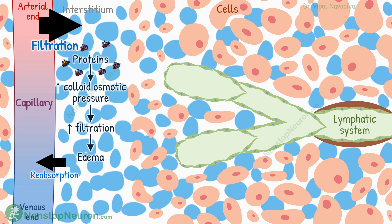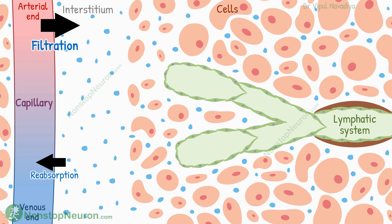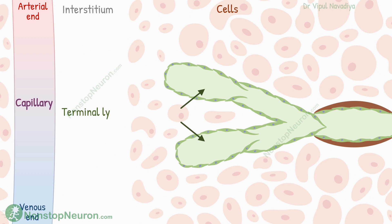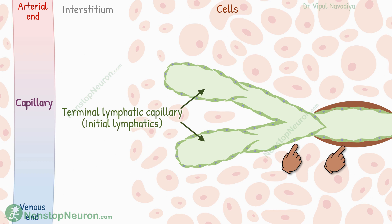But thanks to the lymphatic system, this does not happen. It solves the problem by absorbing all the remaining traces of the filtered fluid, including the proteins. The lymphatic system starts with the terminal lymphatic capillary, or initial lymphatic. At one end they are closed, and at the other end they merge to form progressively larger lymphatic channels called collecting lymphatics.